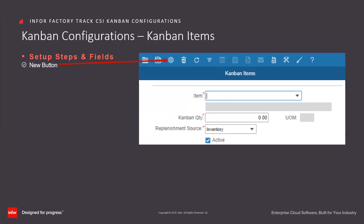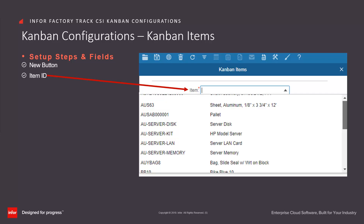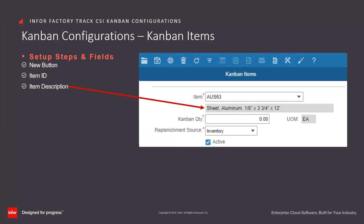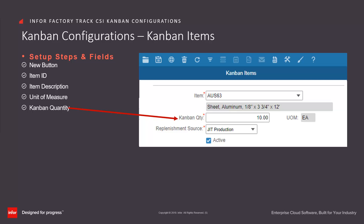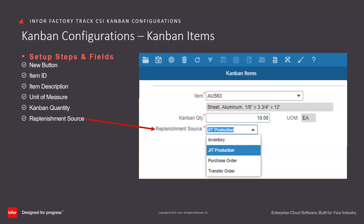To designate an item from your CSI ERP system to be used as a Kanban item, open the Kanban Items form. Click on the New button. Enter or select from a drop-down the item ID. Note that this supports a wildcard or asterisk to reduce the drop-down items returned for selection. Factory Track then displays the associated item description and the unit of measure associated with the selected item. Enter the Kanban quantity of items to use as the default replenishment quantity for Kanbans created for this item, and select from the drop-down the replenishment source for the Kanban. The options are Inventory, JIT Production, Purchase Order, or Transfer Order.